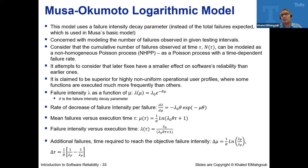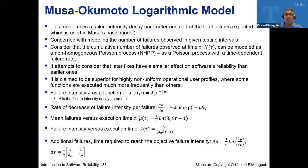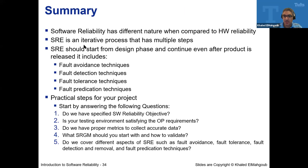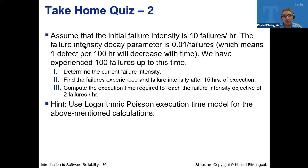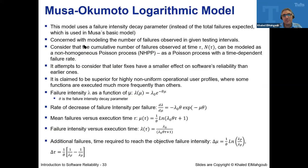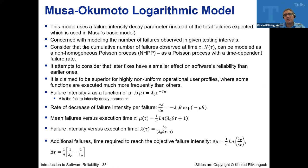That's the last slide. This is the take-home quiz — I'll call it a quiz, not an exam. Professor Langdon will decide how to handle it; it could even be for extra credit. The next model is called Musa-Okamoto, and instead of linear failures, this model uses a logarithmic Poisson distribution.